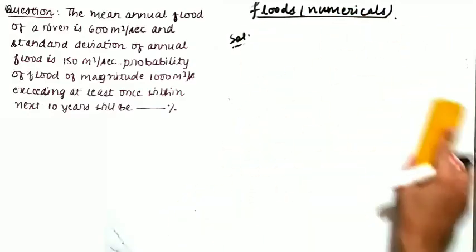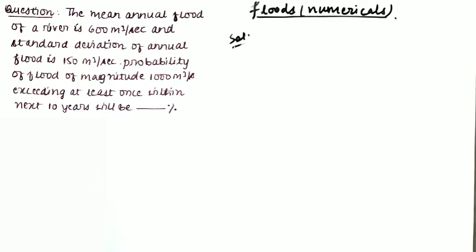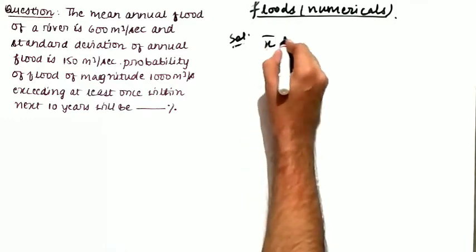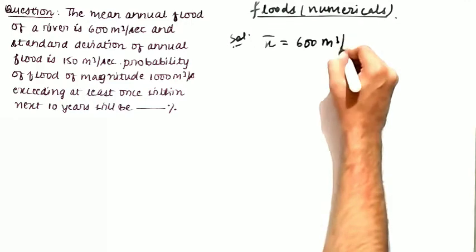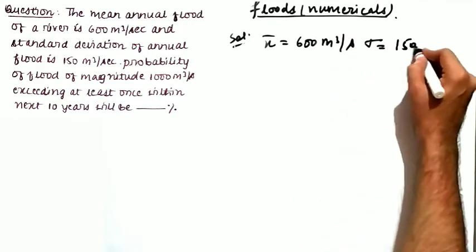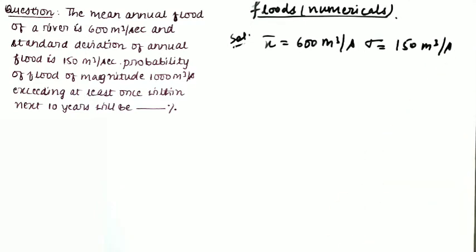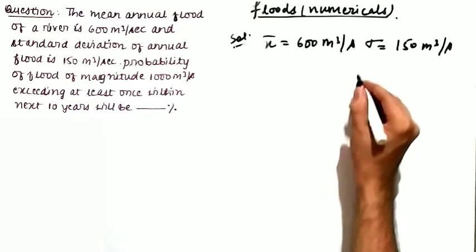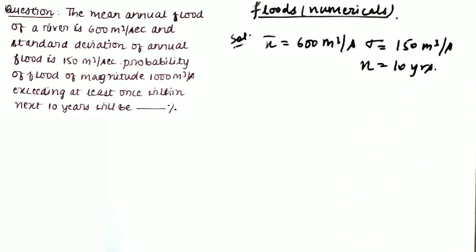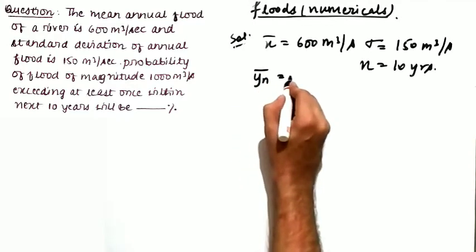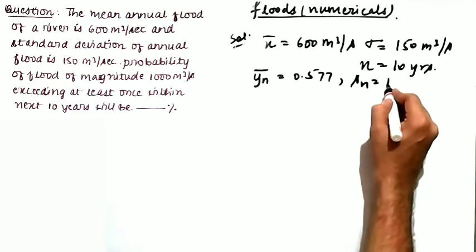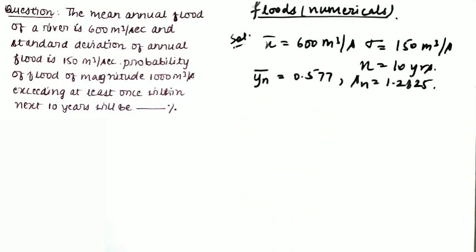The question states that the mean annual flood of a river is x̄ = 600 m³/s and the standard deviation is σ = 150 m³/s. We need the probability that a flood of magnitude xt = 1000 m³/s is exceeded at least once within the next n = 10 years. Given values: ȳn = 0.577 and Sn = 1.2825.